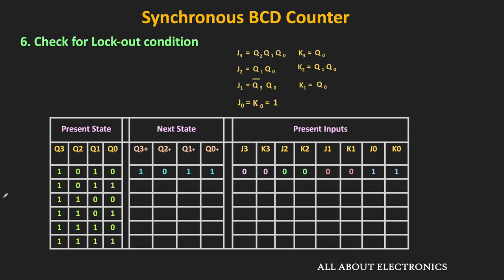From state 1011: J3=0, K3=1 → Q3+=0; J2=K2=1 → Q2 toggles (0→1); J1=0, K1=1 → Q1+=0; J0=K0=1 → Q0 toggles (1→0). So from 1011, the next state is 0100. For state 1100: corresponding inputs are computed similarly — when J=K=0 the output holds, when J=K=1 the output toggles — giving next state 1101.